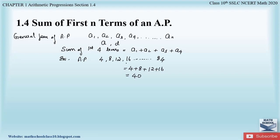If they ask us to find the sum of the first 30 or 40 terms of an AP, we would have to find all the terms and add them one by one. Instead, we can derive a formula that gives us the sum of any n terms of an AP directly. Let us see how to derive that formula.